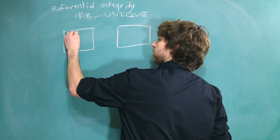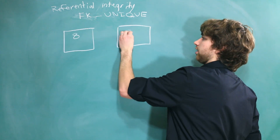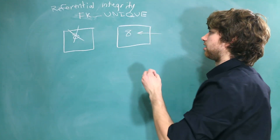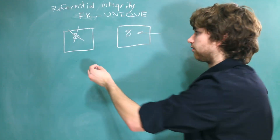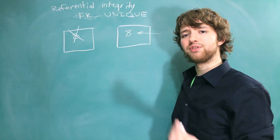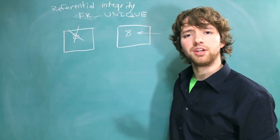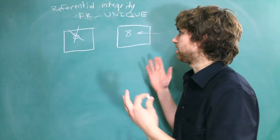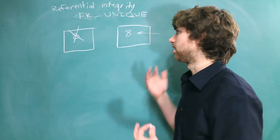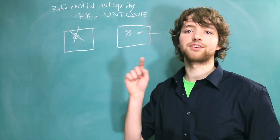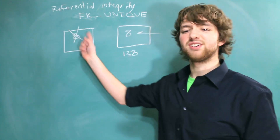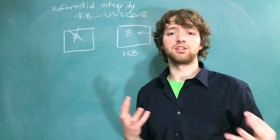For example, we might have an entity over here with the ID of 8, and we might reference that over here, and then this entity gets deleted. Well, this reference still exists, and when you look up 8 over here, nothing exists. Did 8 exist at one point, or did we just accidentally make up the number 8? You're not able to go into the table structure and see that this column references this column, because it doesn't. You could throw a number in like 138, and 138 doesn't even exist in this table. Nothing is forcing this relationship.